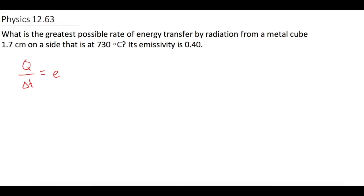So the emissivity of this cube is 0.4 and then we multiply that by sigma which in this case is called the Stefan-Boltzmann constant. And that's a constant that's given to you in your book.